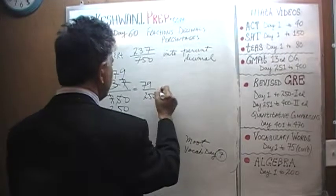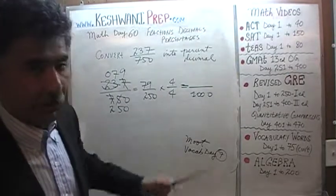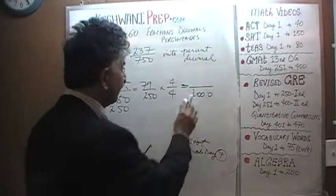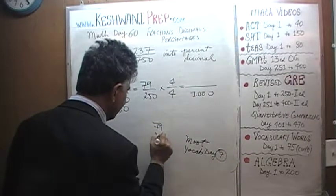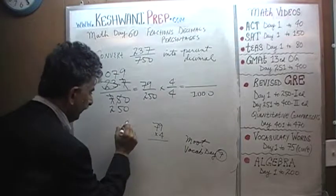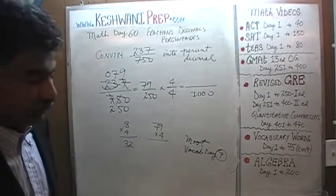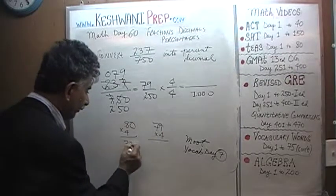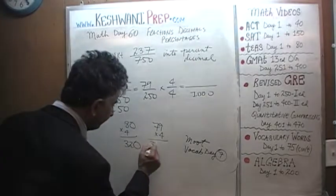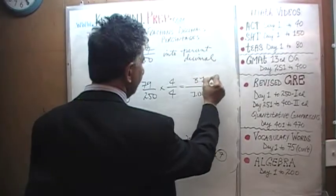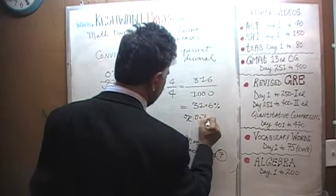Now multiply top and bottom by 4: the denominator becomes 1000. For the numerator, 79 times 4 — we know 80 times 4 is 320, so 79 times 4 is 4 less, which is 316. So 316 over 1000 equals 31.6%, or 0.316.